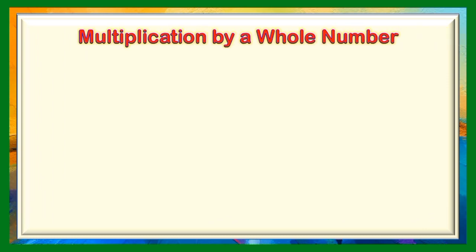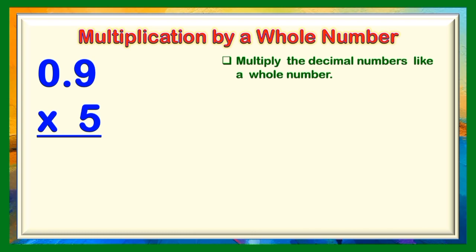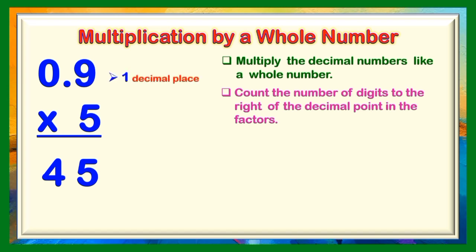Multiplication by a whole number. Let us have this multiplication number sentence: 0 and 9 tenths multiplied by 5. The first step in multiplying a decimal number is to multiply the decimal numbers like a whole number. So let us multiply: 5 times 9, we will get the answer of 45. But take note, children, this is not yet the final answer. We need to follow the second step: count the number of digits to the right of the decimal point in the factors. In our multiplicand, we have 1 decimal place.